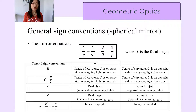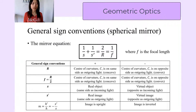The radius of curvature is positive when the mirror is concave — that is when the center of the sphere is on the same side as the outgoing light. And it is negative when we have a convex mirror, that is when the center of curvature is on the opposite side as the outgoing light.